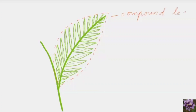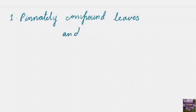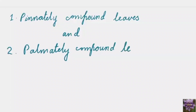The stalk giving rise to multiple leaflets is called the rachis. These leaf-resembling structures are called leaflets. A compound leaf may be of two kinds: pinnately compound leaves and palmately compound leaves.